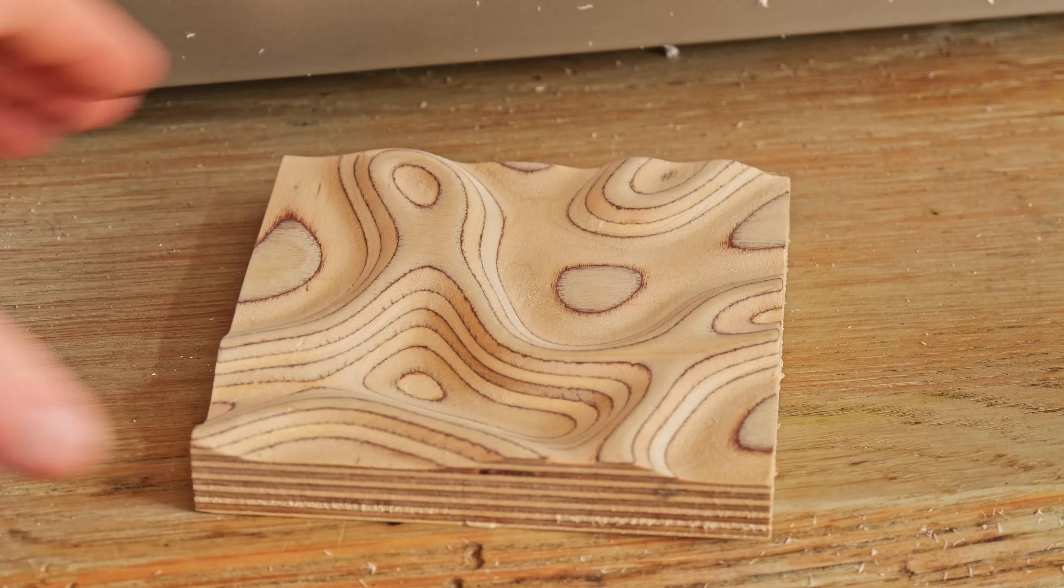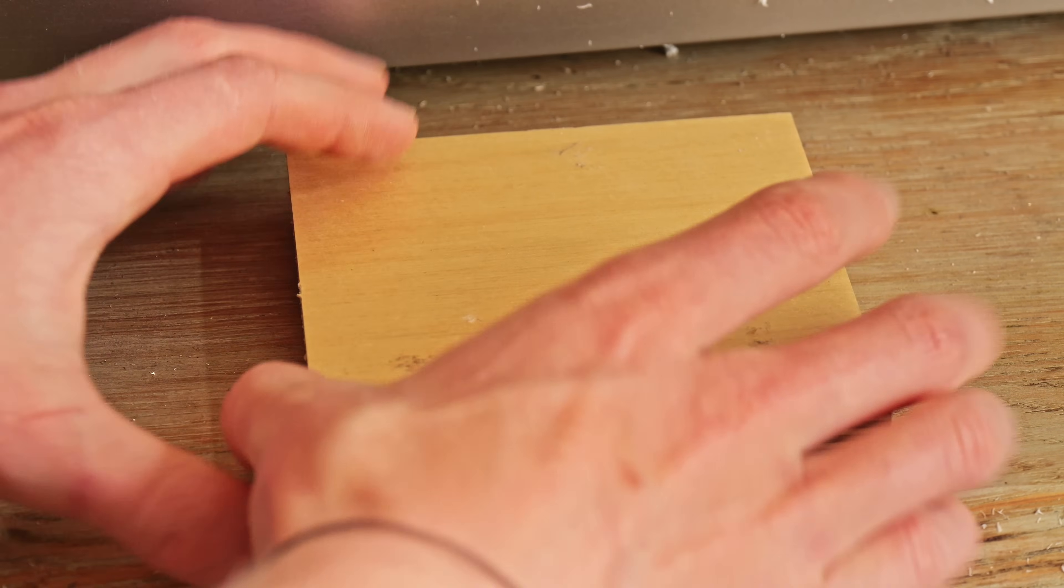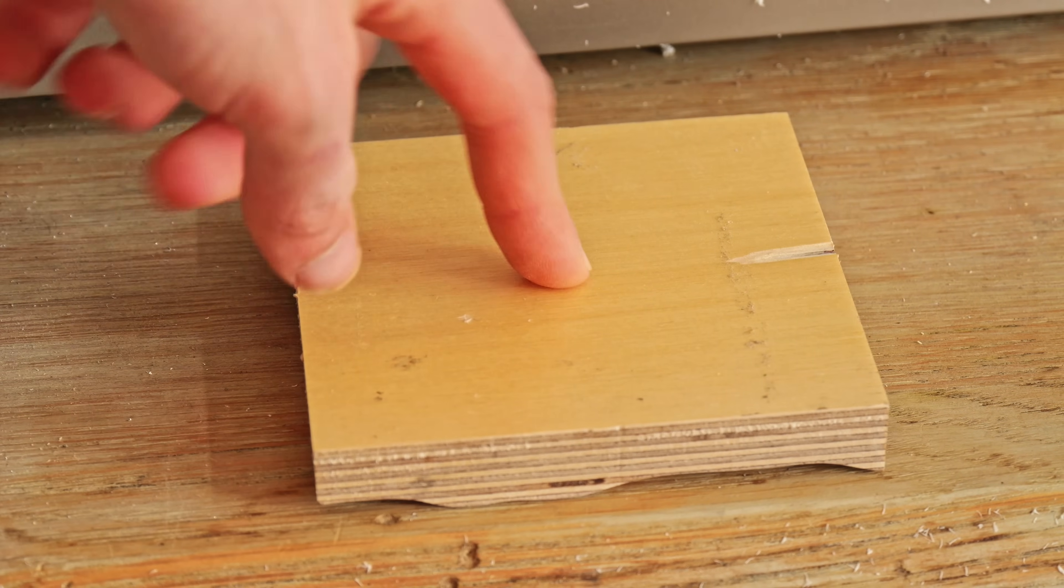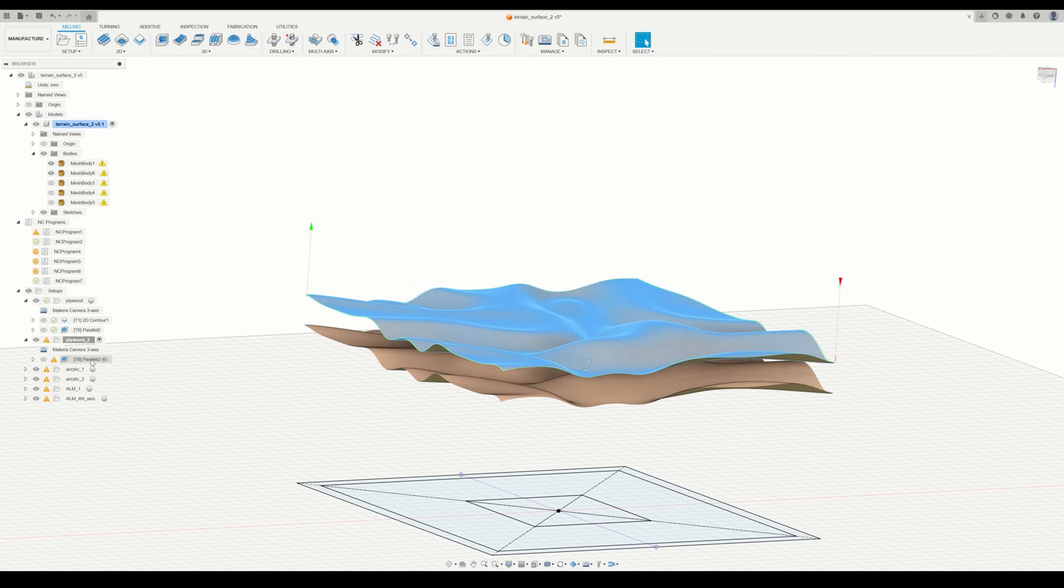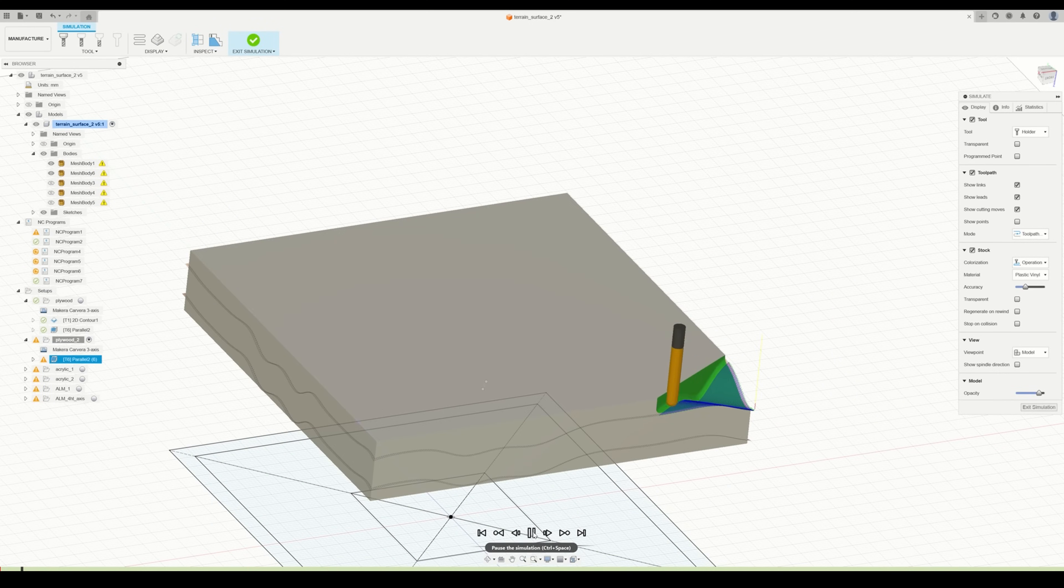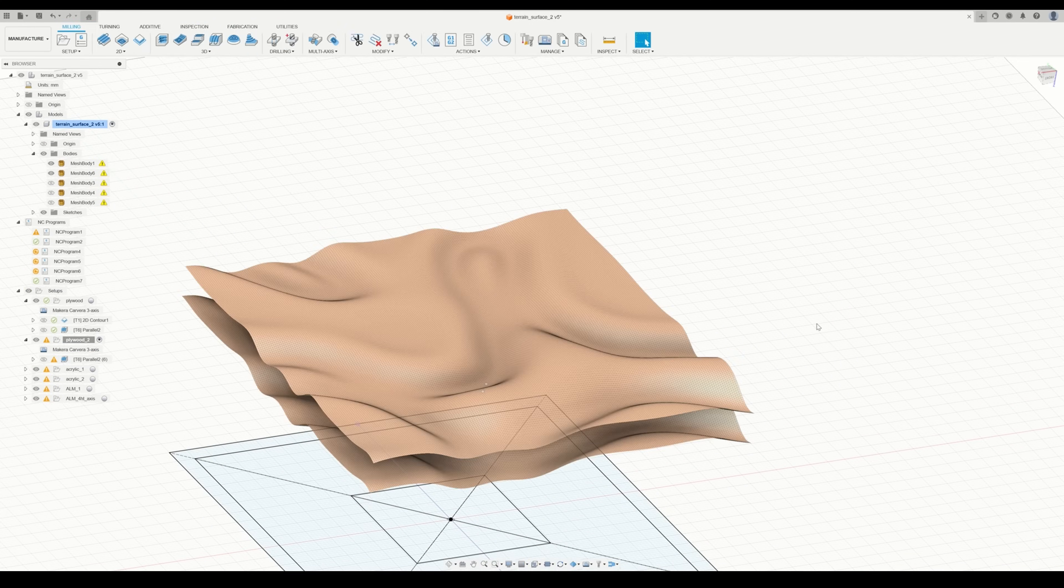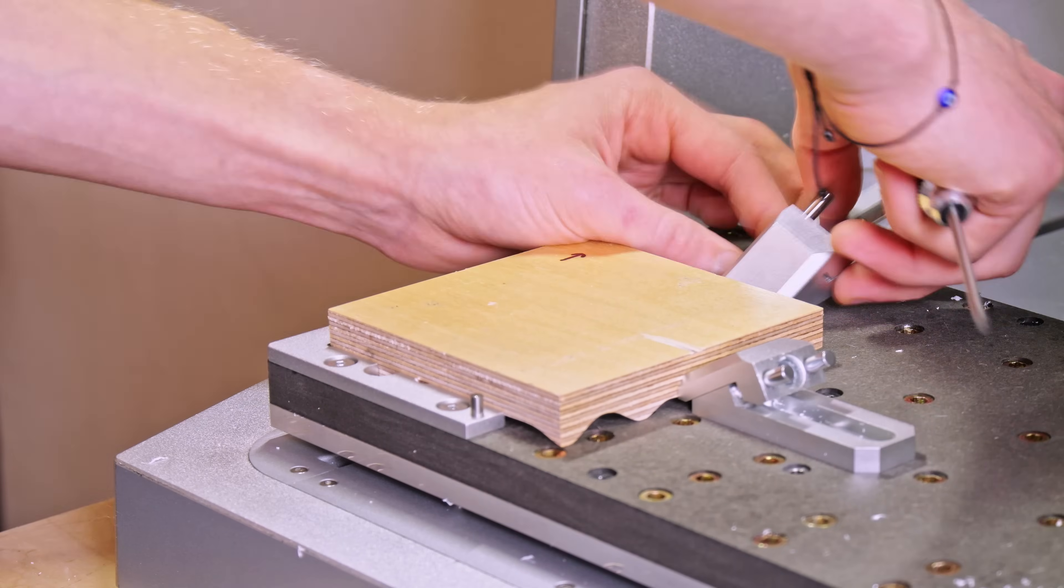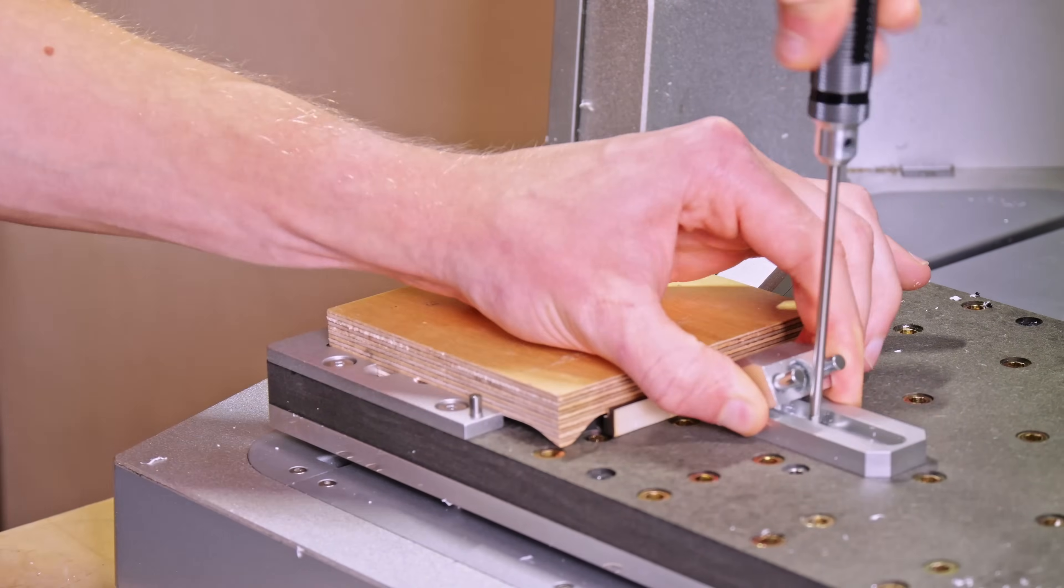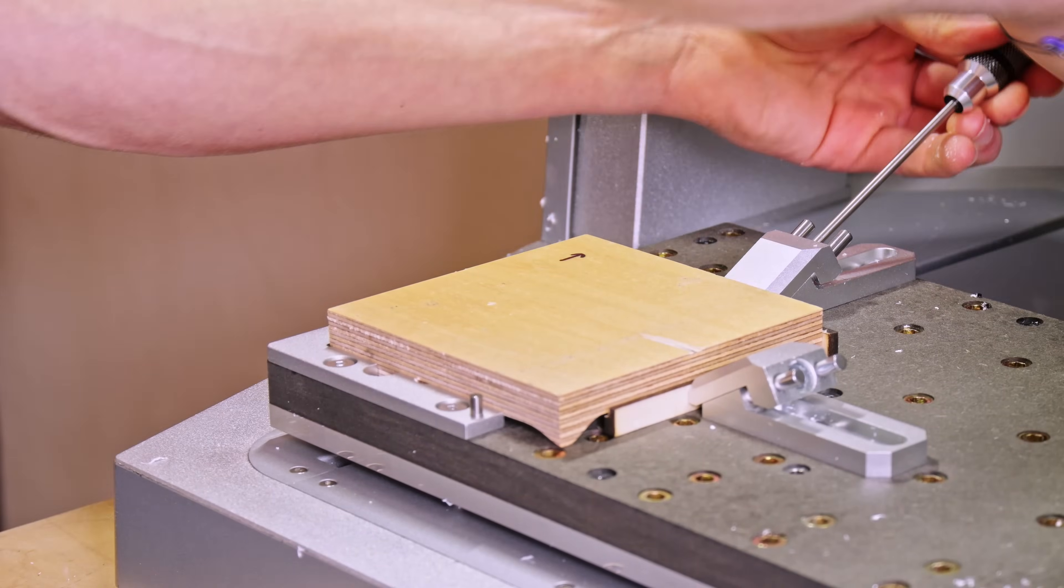I realized I could flip the workpiece upside down and it stays relatively flat and doesn't wobble very much. This means that I can just copy the mesh and move it down a little bit, regenerate the toolpath and then I can do a two-sided carving, kind of with a constant thickness. So I flipped the part over and clamped it back on the machine, this time using some side clamps so that I've got access to the entire top surface.